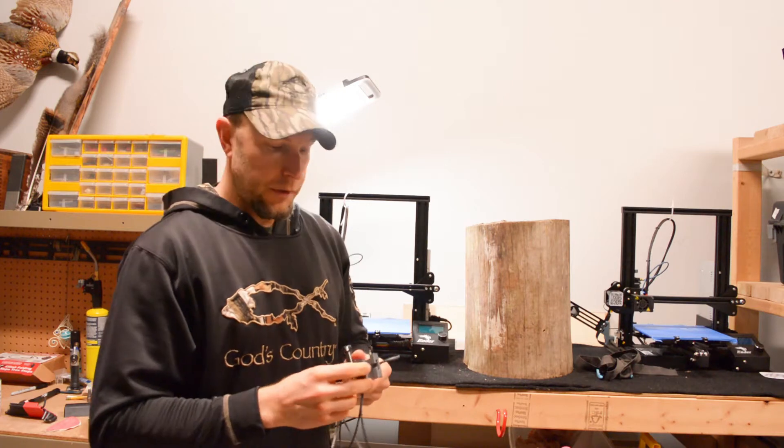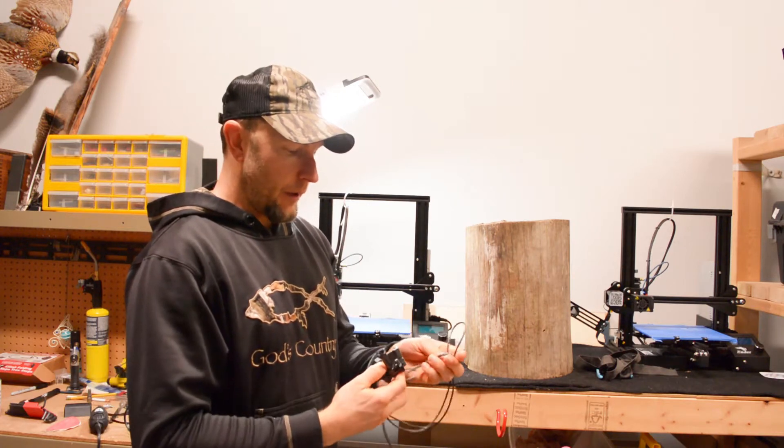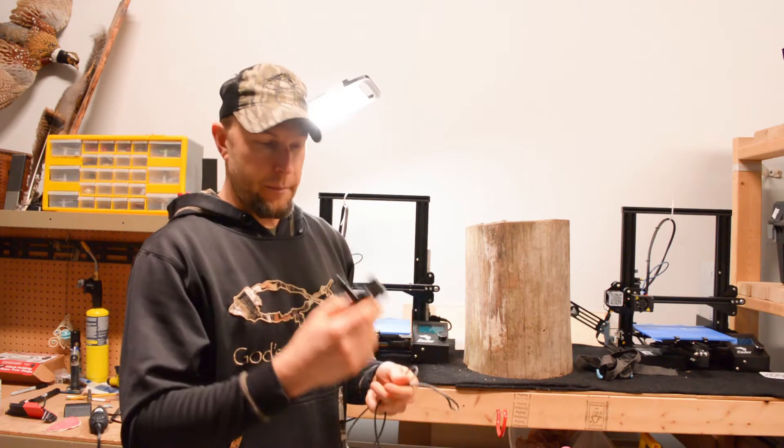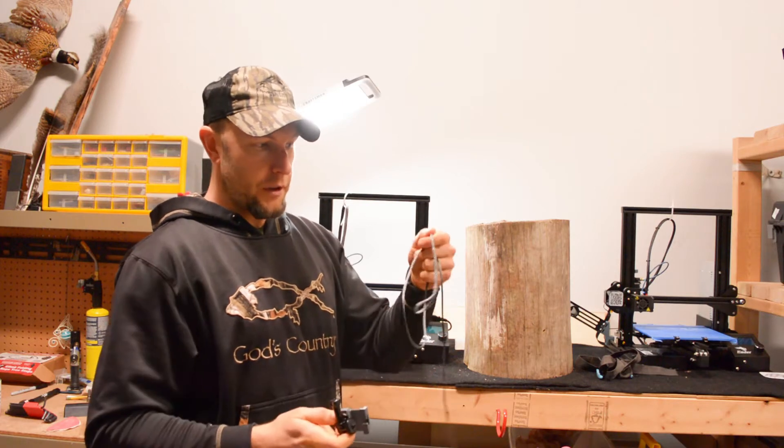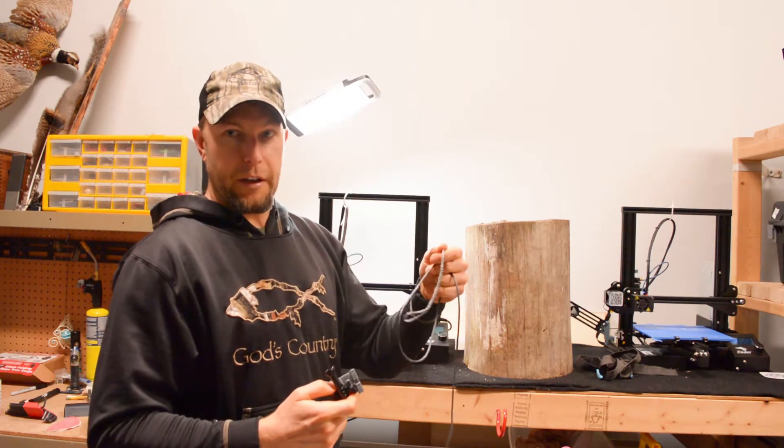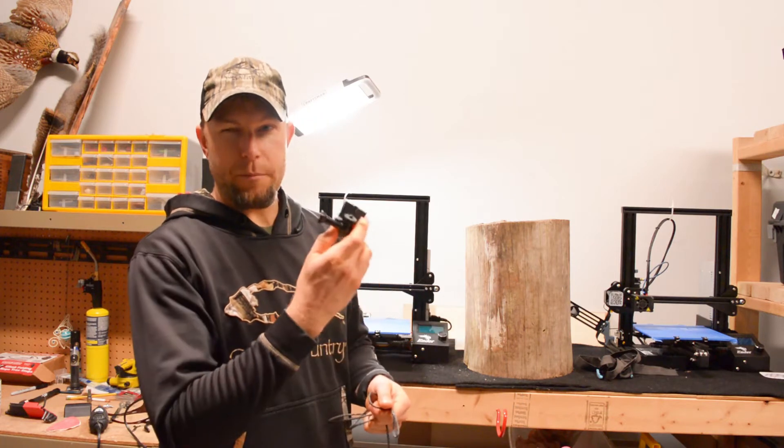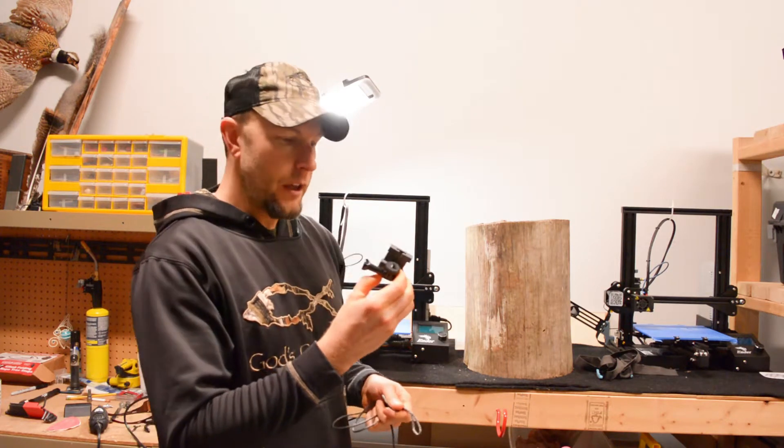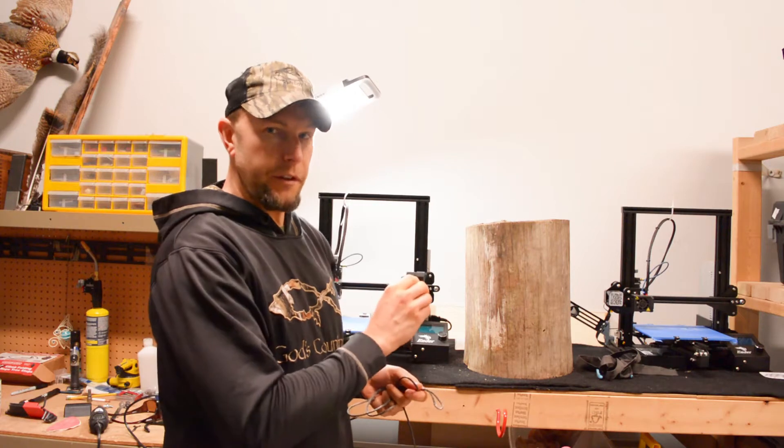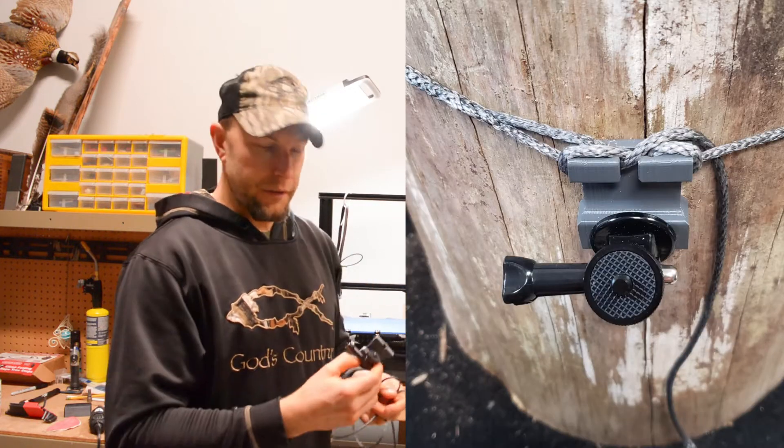Or a piece of paracord. So any one of those can be used to mount this specific mount. Included will be the Amsteel rope because I like a rope that's not going to stretch, provides a little bit more stability with the mount itself. And you'll see that once we go through the install.